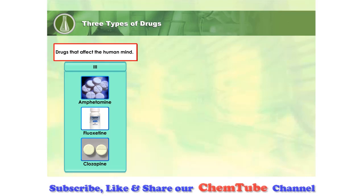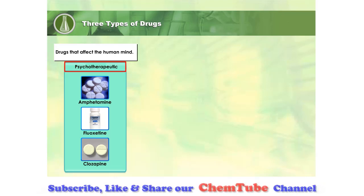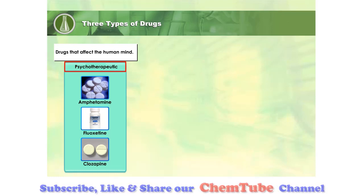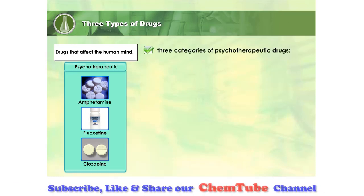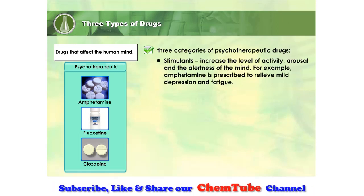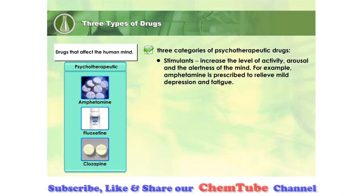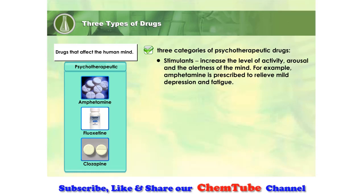Drugs that affect the mind are also known as psychotherapeutic drugs. They are used to treat people with mental illness who are not in control of their thoughts, feelings and behaviour. There are three categories of psychotherapeutic drugs. Stimulants are used to increase the level of activity, arousal and the alertness of the mind. For example, amphetamine is prescribed to relieve mild depression and fatigue.